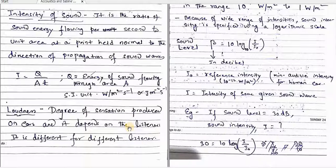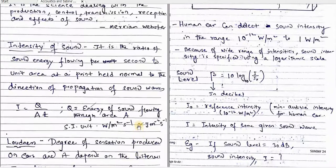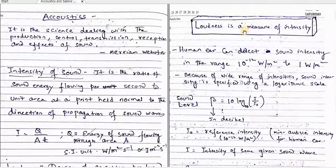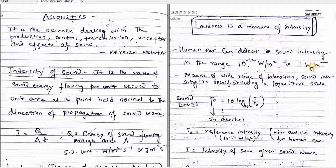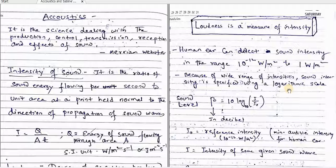Next comes loudness. Loudness is the degree of sensation produced on ears. Loudness is a measure of intensity of sound. The human ear can detect sound intensity in the range of 10 to the power minus 12 watt per meter square to 1 watt per meter square. Because there is a wide range of intensities of sound, the sound intensity is usually expressed in terms of a logarithmic scale.